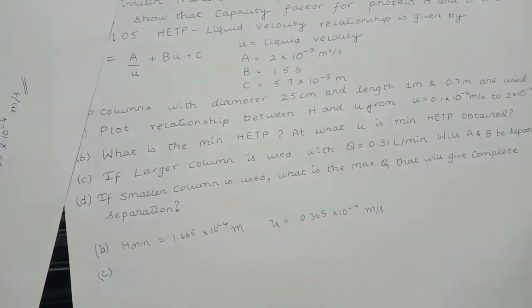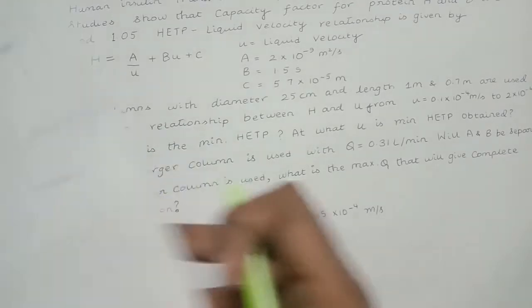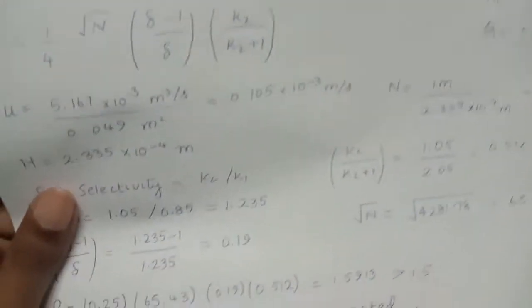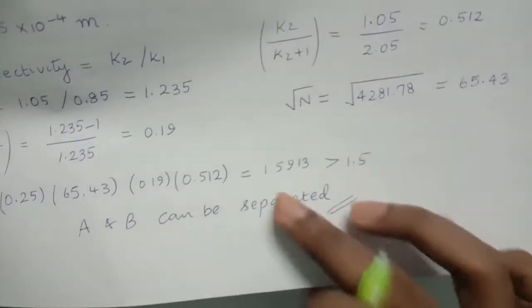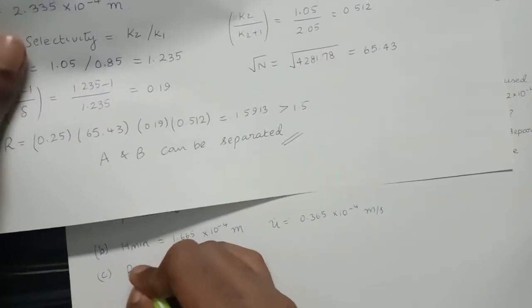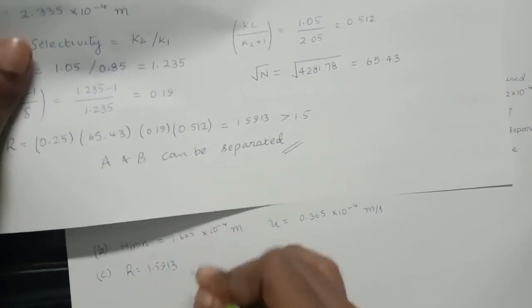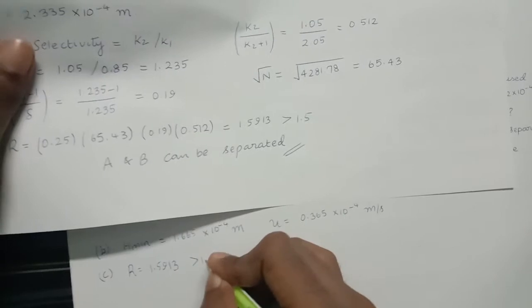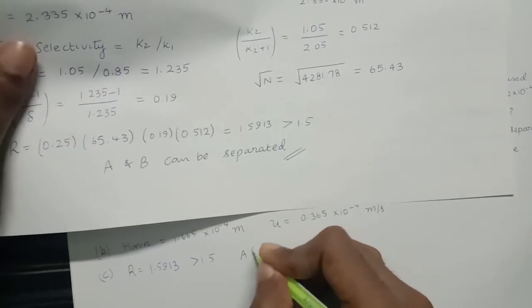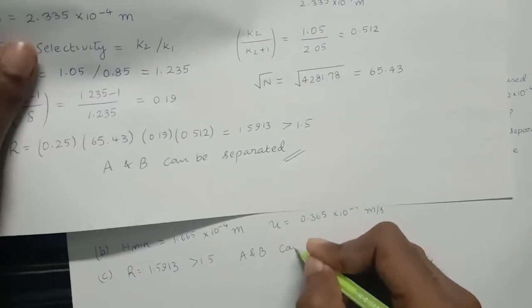For part c — will A and B be separated in the large column? — we said yes, they can be separated. We solved it and got a resolution R equal to 1.5913, which is greater than 1.5, so A and B can be separated.